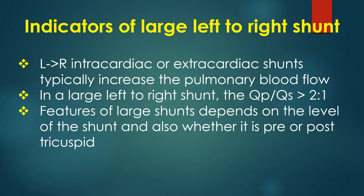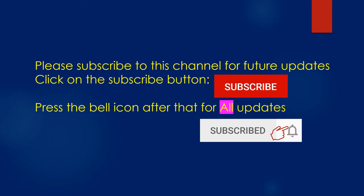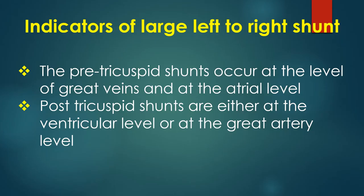Features of a large shunt depend on the level of the shunt and also whether it is pre or post tricuspid. Pre-tricuspid shunts occur at the level of the great veins and at the atrial level. Post-tricuspid shunts are either at the ventricular level or at the great artery level.